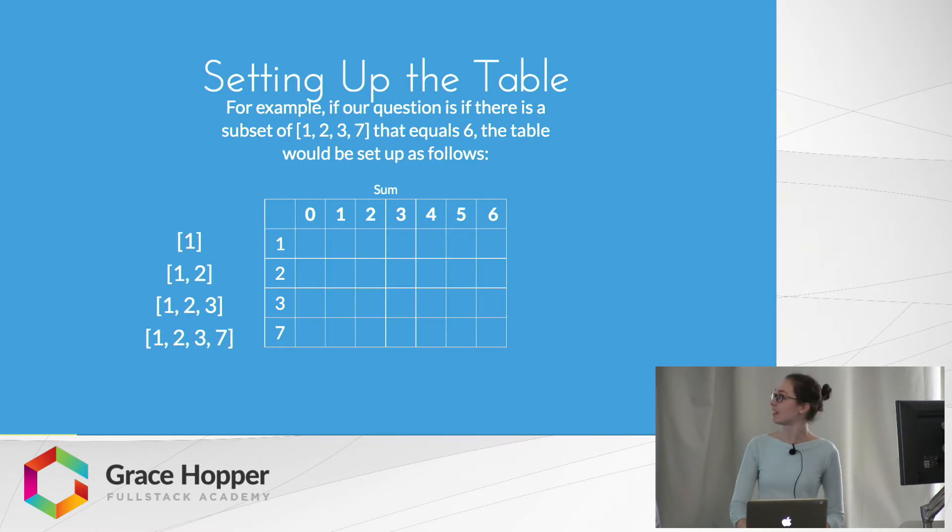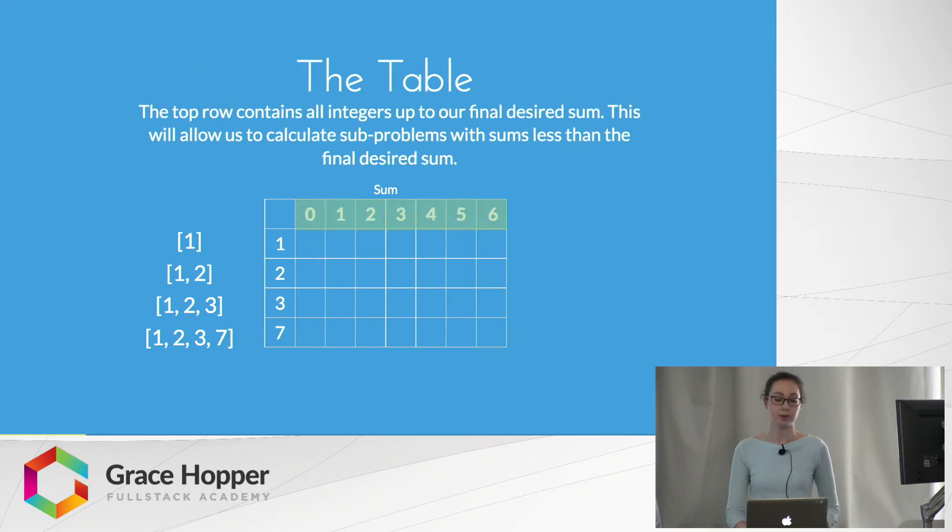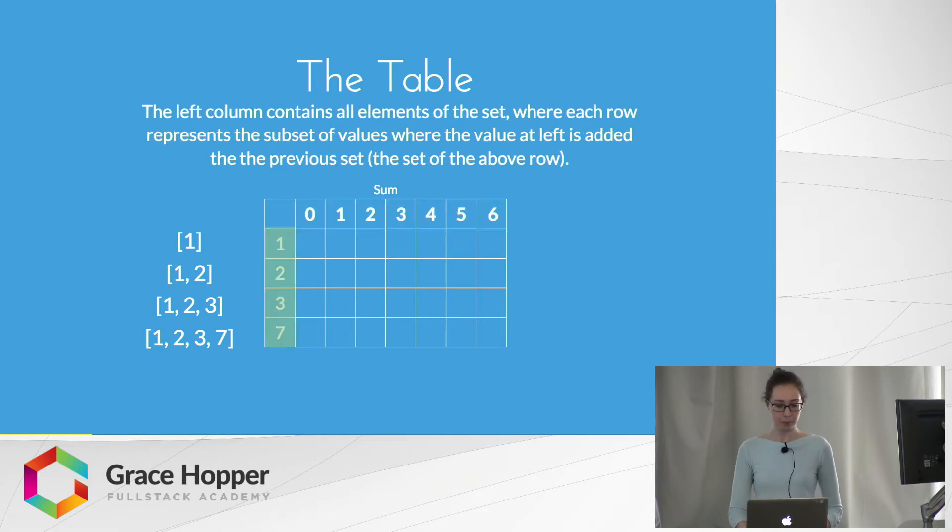This is how we would set up our table. For example, if our question is whether there's a subset of {1, 2, 3, 7} that equals 6, the table would be set up as follows. The top row contains all integers up to our final desired sum. This allows us to calculate subproblems with sums less than the final desired sum. The left column contains all elements of the set, where each row represents the subset of values where the value at left is added to the previous set, the set of the above row.